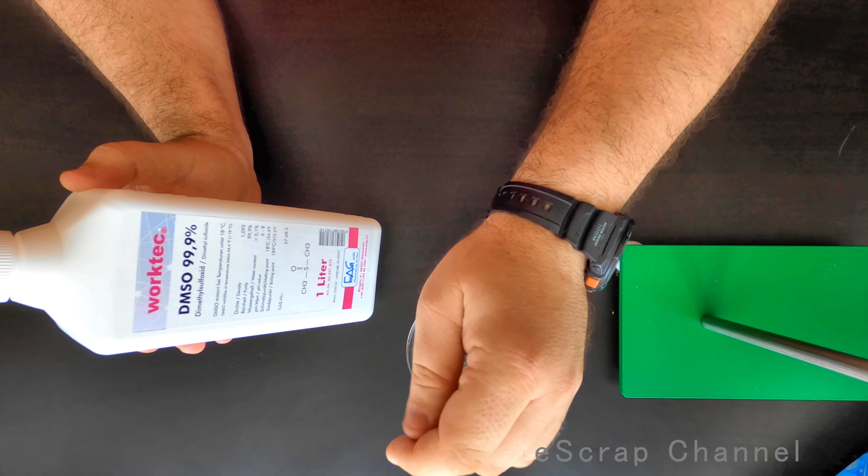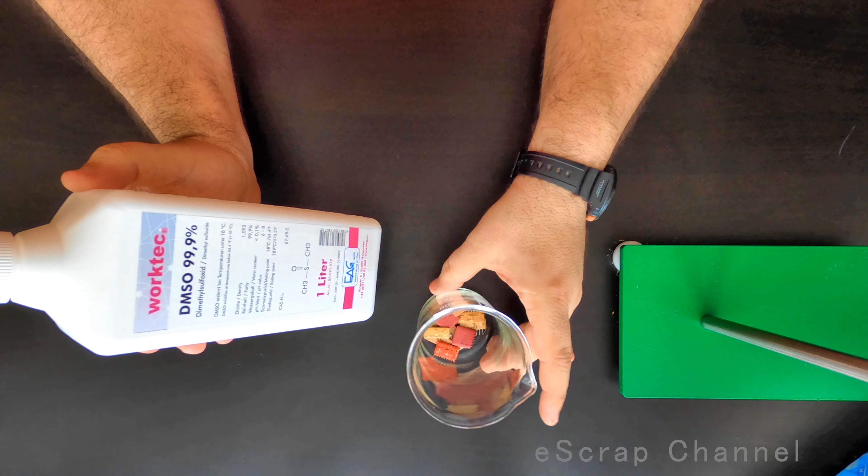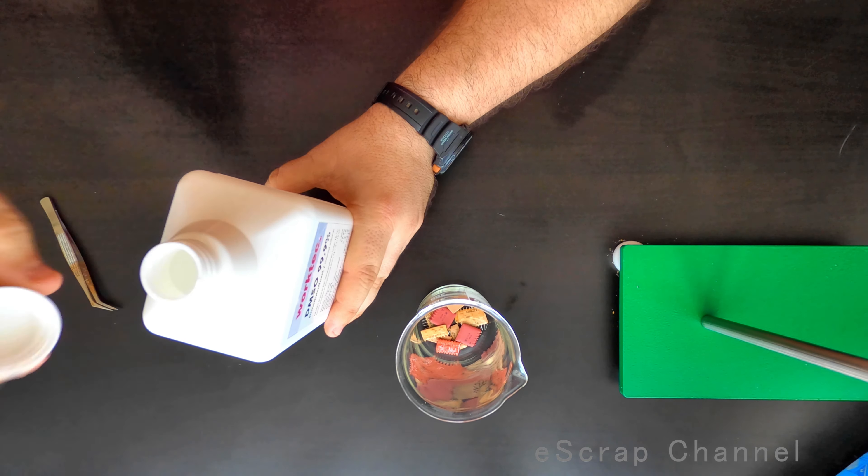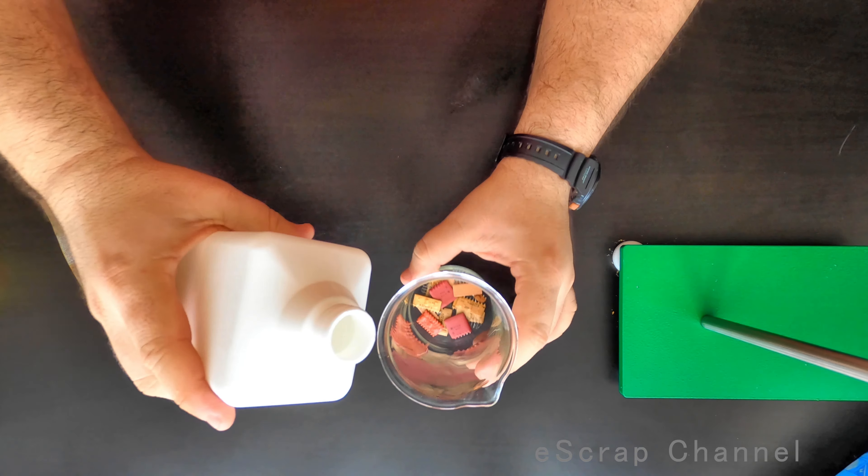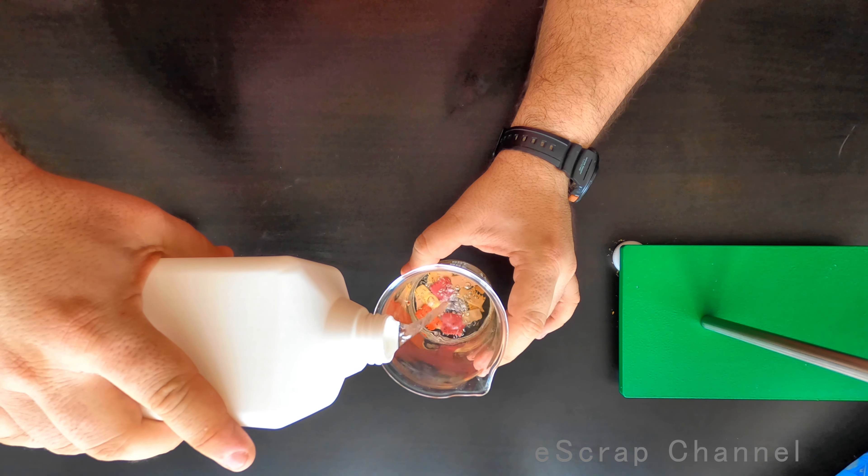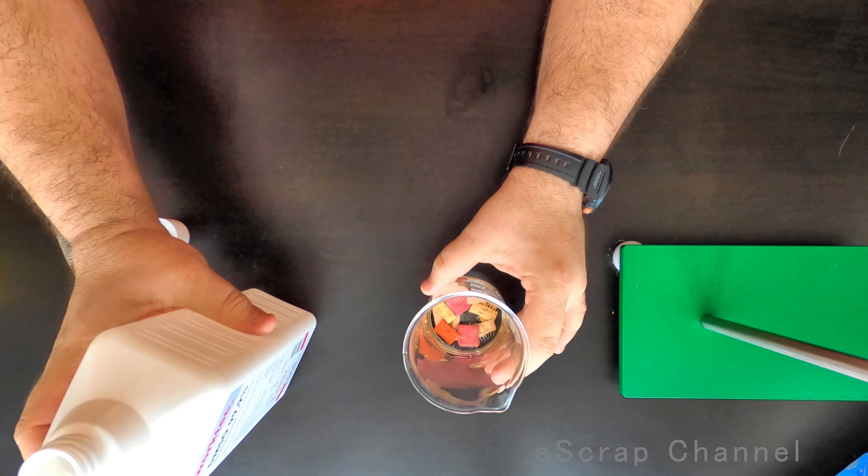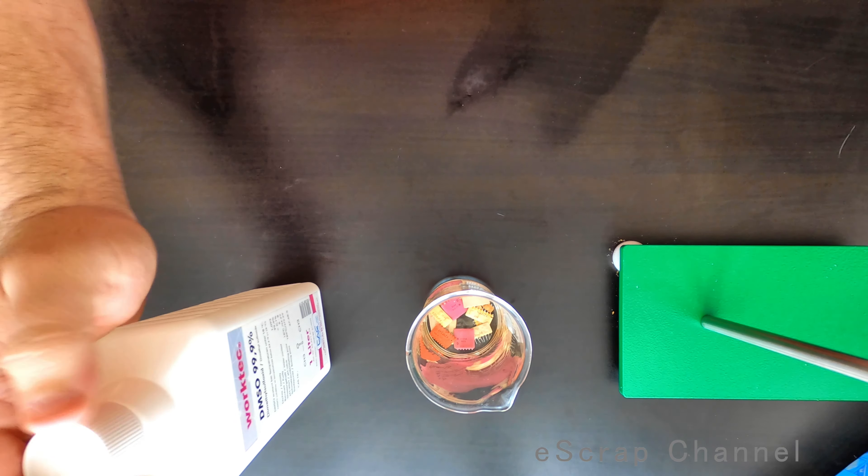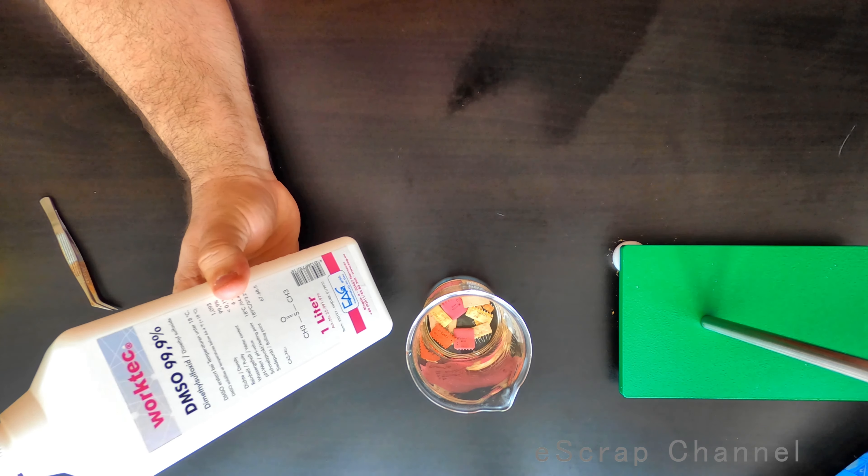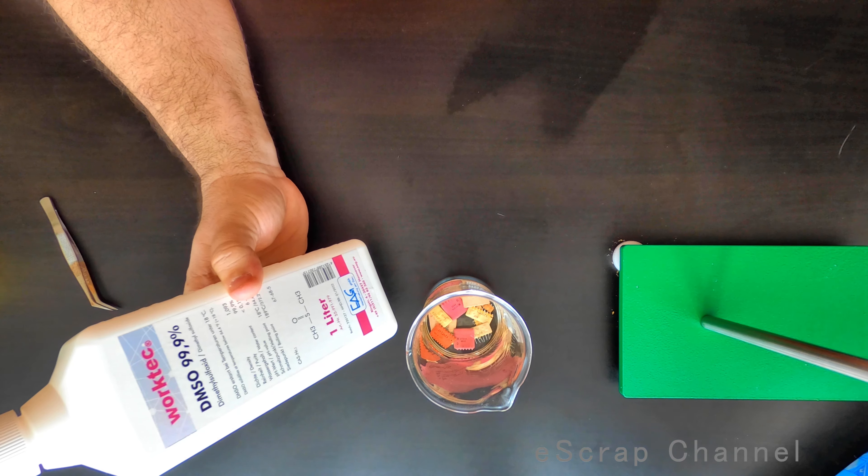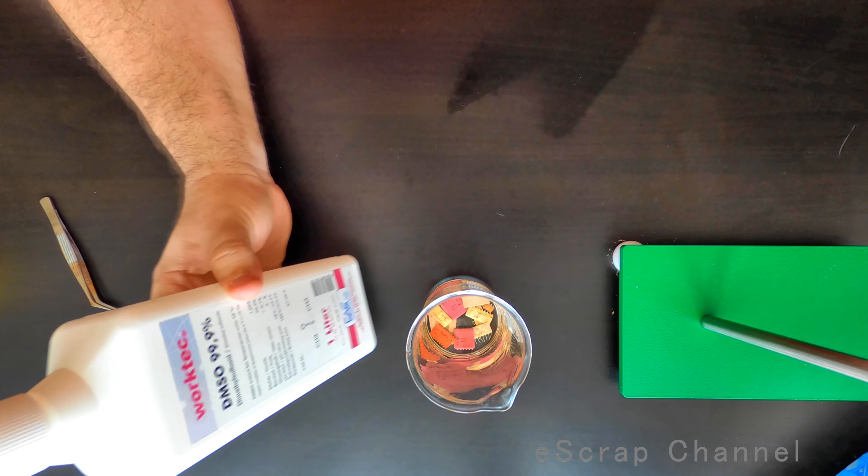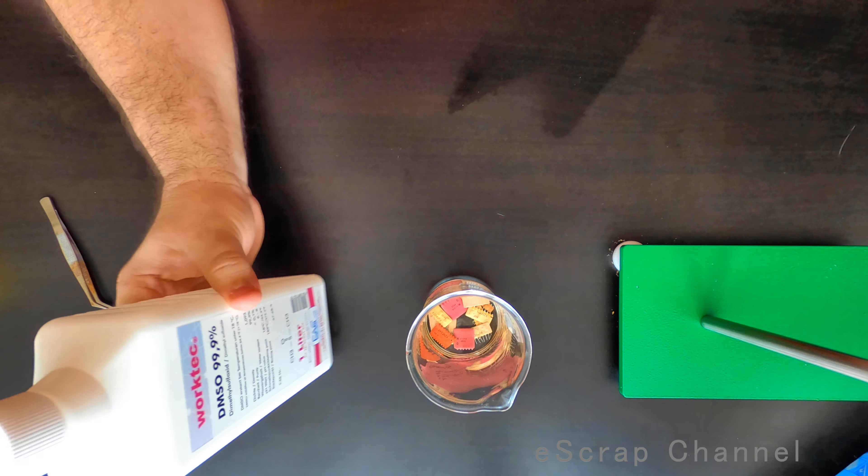You can speed up this reaction by heating the solution. So let's do this. I'll put them in this beaker and cover them with a small amount of organic solvent. What is the price of the DMSO? I find it at about 25 euro per liter.